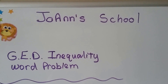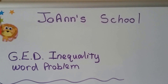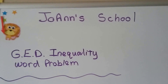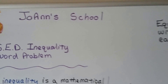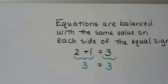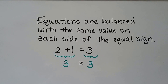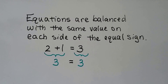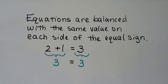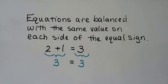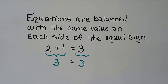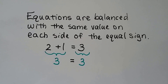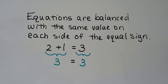I have a GED inequality word problem for you and I just want to make sure that we review this really quick. Equations are balanced with the same value on each side of the equal sign. So two plus one on the left of the equal sign is three, and because there's an equal sign, what's on the right of it has to be three.